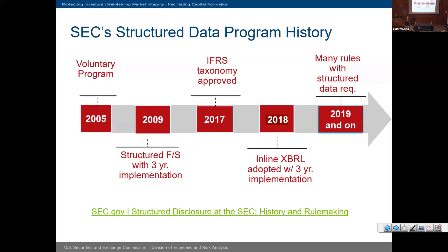Then 2018 was another big milestone with inline XBRL. In case you're not aware of what XBRL stands for, it's Extensible Business Reporting Language — you can think of it as a language for machines to read and process data. The 2018 adoption also had the same three-year implementation with large filers going first and smaller reporting companies and foreign private issuers going later. The big difference between traditional XBRL and inline XBRL is that it combines human-readable presentation — you see the HTML — but when you hover over tagged data you see the embedded metadata: codification references, whether the balance is debit or credit. This makes it much easier for filers and users to use the data and spot data quality errors.